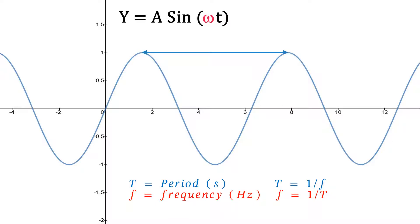T is the period in seconds and f is the frequency in hertz. They are the reciprocal of each other.